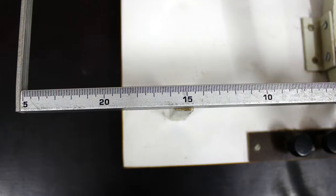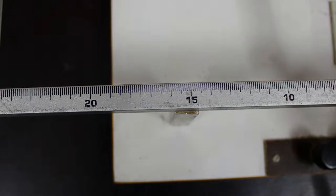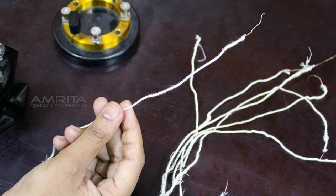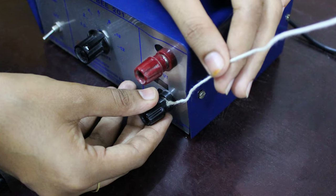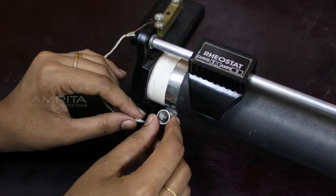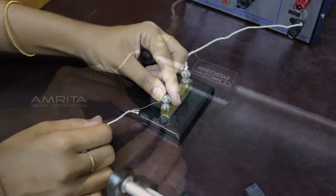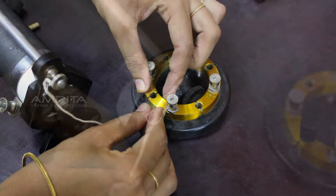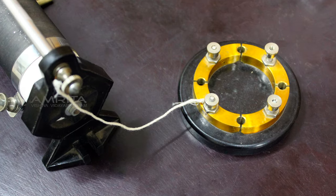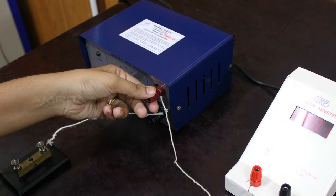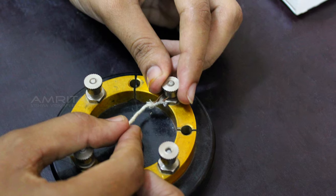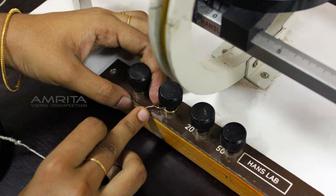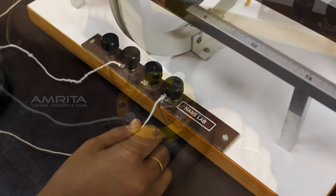To find the magnetic field at different points, set up the electrical connections as follows: The negative terminal of the cell E is connected to one end of the rheostat R through a key K. The other end of the rheostat is connected to terminal 3 of the commutator. The positive terminal of the cell is connected to terminal 1 of the commutator through an ammeter. The circular coil is connected to terminals 2 and 4 of the commutator.